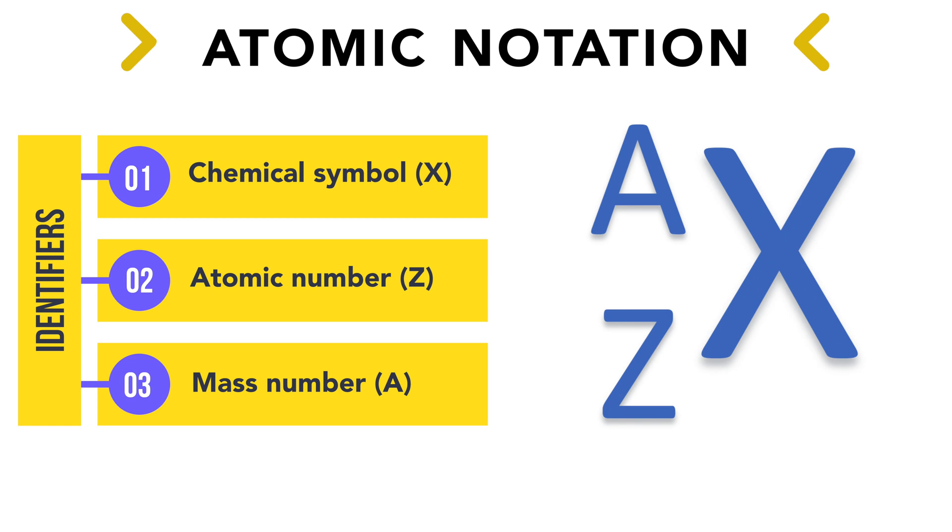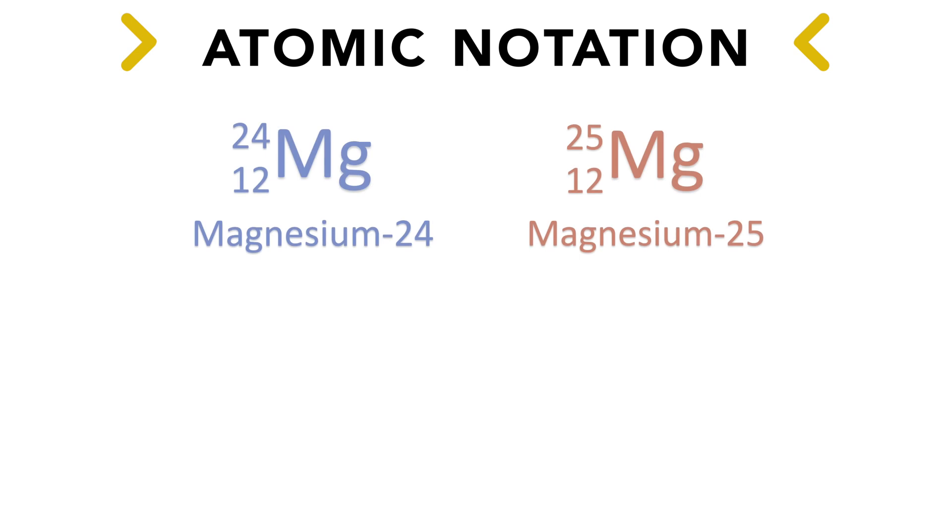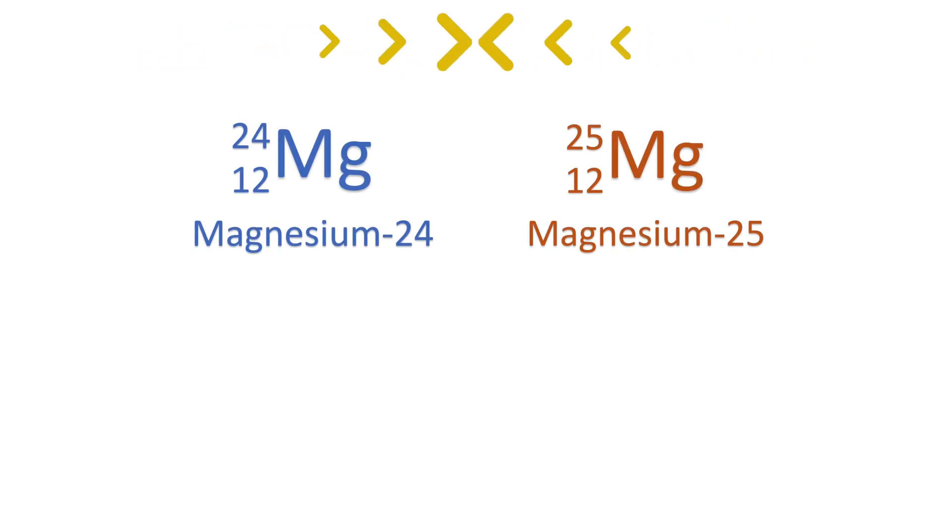An alternative to this notation is to write the element name, with the mass number hyphenated at the end, such as with magnesium 24 or magnesium 25.